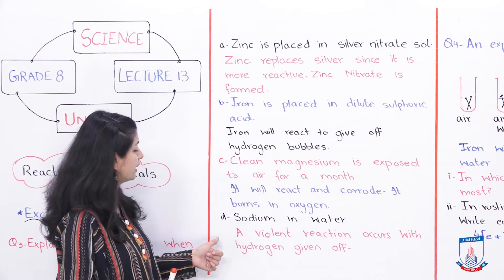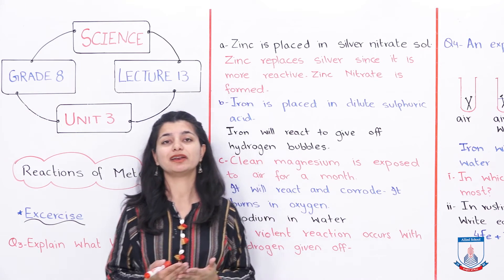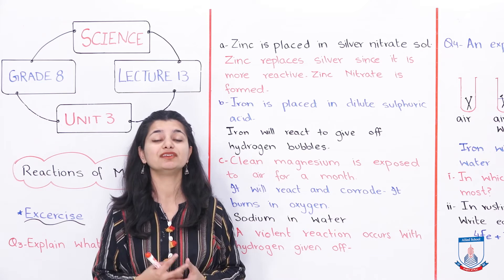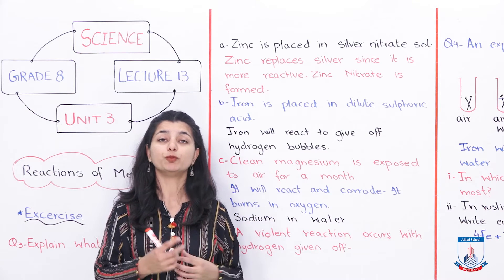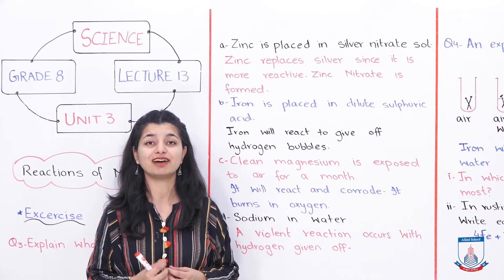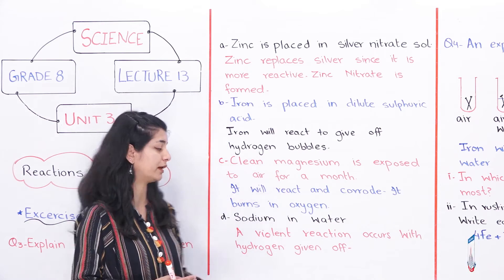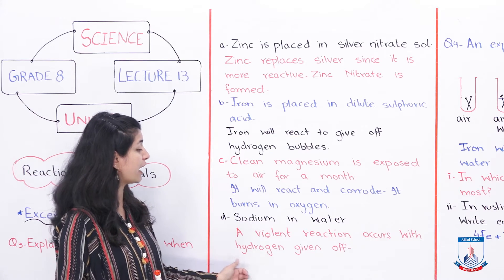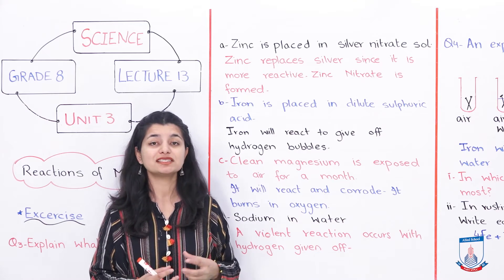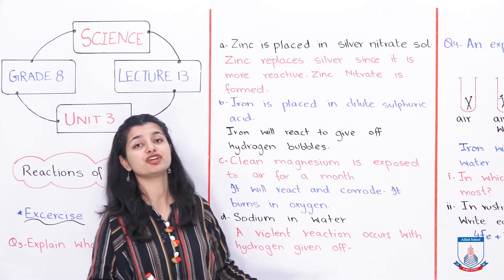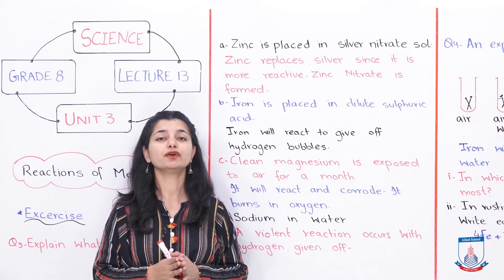The fourth option is sodium in water. How does sodium react with water? Sodium is one of the most reactive metals — in the reactivity series it is almost at the top. So the reaction with water is very violent. Bubbles are given off. A violent reaction occurs with hydrogen given off. It is a very violent reaction and hydrogen bubbles are released into the environment. That is it for question number 3.